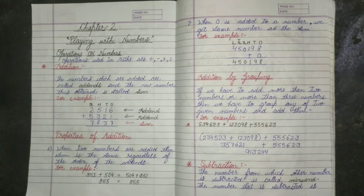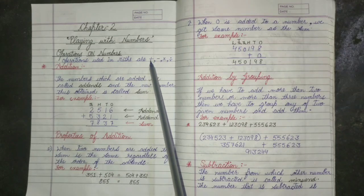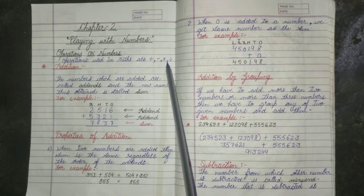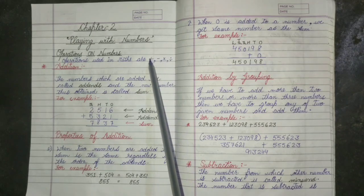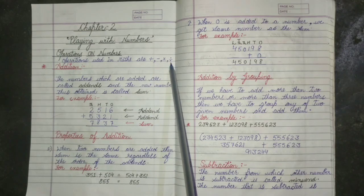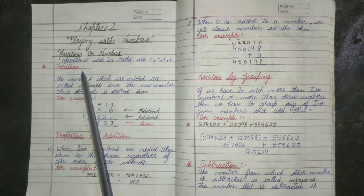Our first topic is Operations on Numbers. In maths, we have 4 operations: plus, minus, multiply, and divide — or we can say addition, subtraction, multiplication, and division. Firstly we are going to discuss about addition.